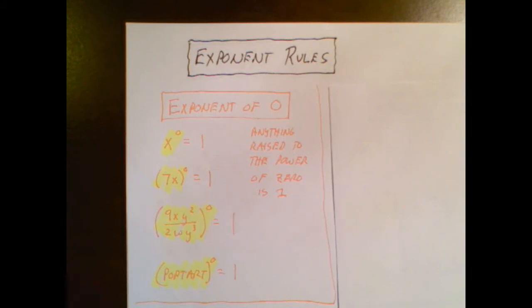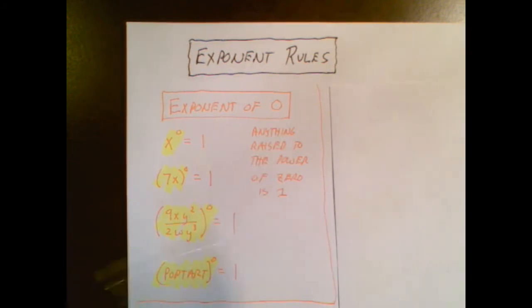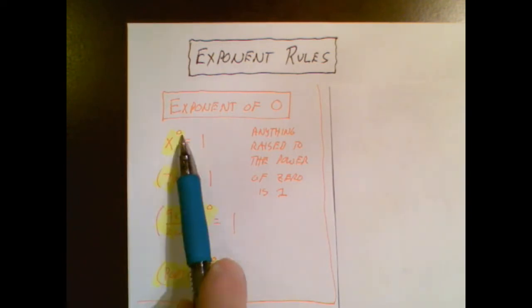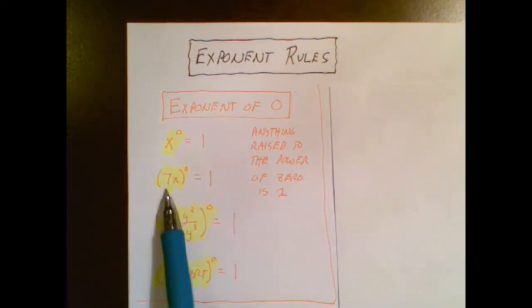This one is short and sweet. Anytime you have an exponent of 0 the answer is 1. x to the 0? 1. 7x to the 0 power? 1. Gobbley gook to the 0 power? 1. Now that's a math rule we can get behind.